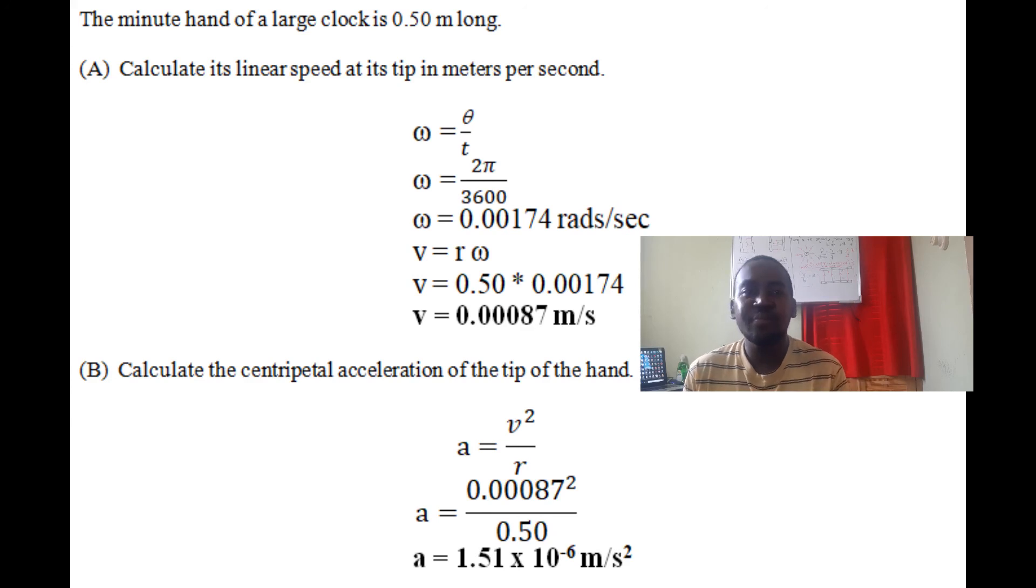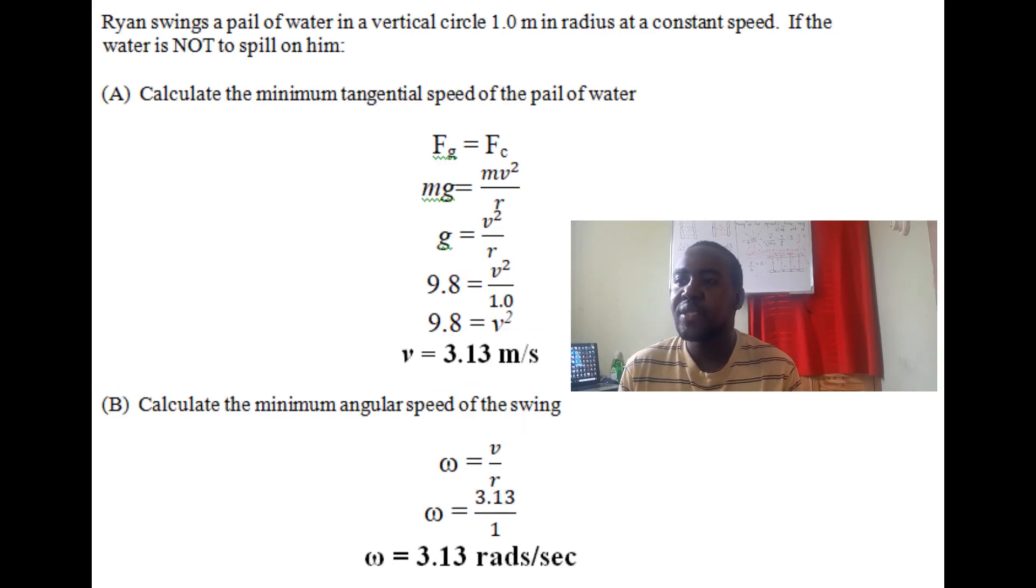Next question: Ryan swings a pail of water in a vertical circle one meter in radius at constant speed. If the water is not to spill on him, calculate the minimum tangential speed of the pail of water. The minimum tangential speed means we're finding the linear speed, because linear velocity is tangent to the circle.